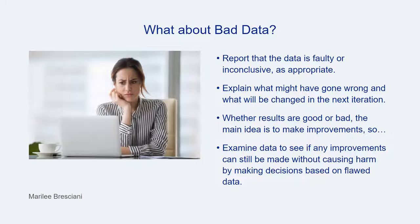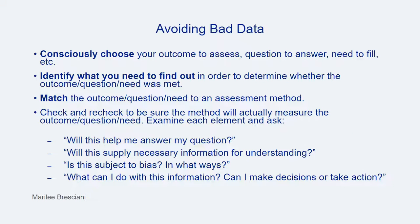It's important to acknowledge that the assessment path doesn't always run smoothly. For example, sometimes the resulting data is just bad. Bad data might be faulty data, inconclusive data, or data that for some other reason shouldn't be used. In these cases, library assessment practitioners can explain what might have gone wrong with the assessment and describe what will be changed in the next iteration. That said, the goal of assessment is to make improvements, so it's worth examining the data closely to see if any improvements can still be made without causing harm by making decisions based on flawed data. Bad data can often be avoided through planning — by consciously choosing an outcome question or need to guide the assessment, determining what you need to find out to ascertain whether the outcome question or need was met, matching outcome questions or needs with assessment methods appropriately, and checking repeatedly on the links that connect the various stages of the assessment cycle.